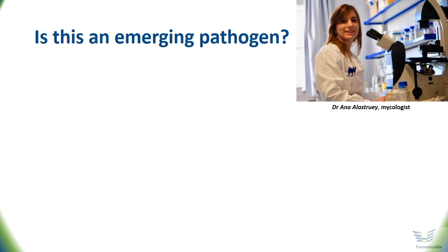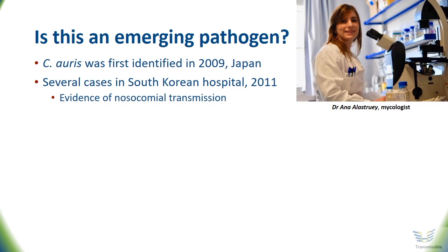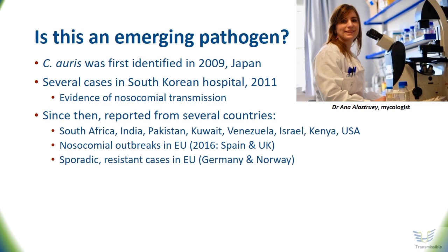Thank you for inviting me — it's my pleasure. The first description of Candida auris was in 2009 in a Japanese patient from an ear swab. It was then isolated in 2011 in several patients in a Korean hospital, where it was demonstrated to be a nosocomial pathogen. Since then it has been reported worldwide — in India, South Africa, and the US, with big outbreaks also in the UK and Spain. We searched our collections using molecular methods since 2011 and had none, and suddenly it's appearing everywhere. So yes, it is an emerging pathogen.